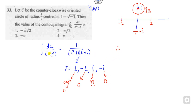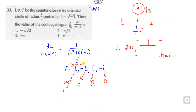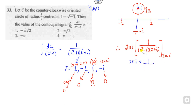Iota lies inside the circle, which is a singularity, so we need to calculate the residue there. The answer is 2πi times the residue at the singular point iota. We write the function apart from the (z − iota) factor as (z² − 1)(z + iota). Substituting z = iota: iota squared minus 1 is −2, and z + iota gives 2i. So the answer is −π/2.